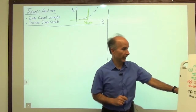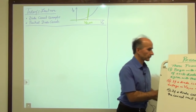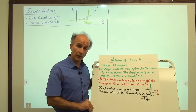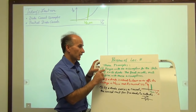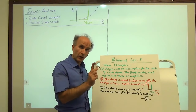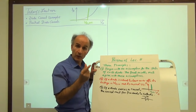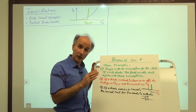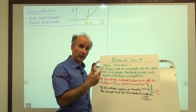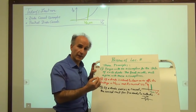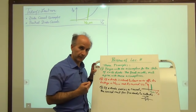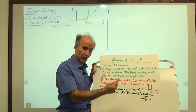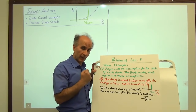In lecture number 8, we saw that in analyzing diode circuits, we must follow three principles. The first principle is we begin with an assumption regarding the state of each diode. Some diodes might be off, some diodes might be on. We just have to make an assumption — preferably an intelligent, educated guess — regarding the states, and then write these assumptions down before we analyze the circuit. The final results in terms of voltages and currents must agree with the assumptions we made at the beginning.